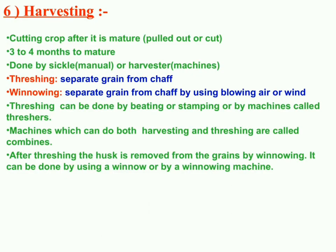The next step is harvesting. The cutting of a crop after it is mature is called harvesting. Harvesting is done manually, by sickle, or by machine. In India, many festivals are associated with harvesting, like Pongal and Baisakhi. In the harvested crop, grain seeds need to be separated from the chaff using a machine called a combine — this process is called threshing. Threshing is followed by winnowing.